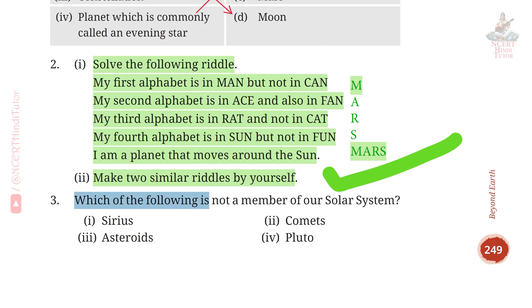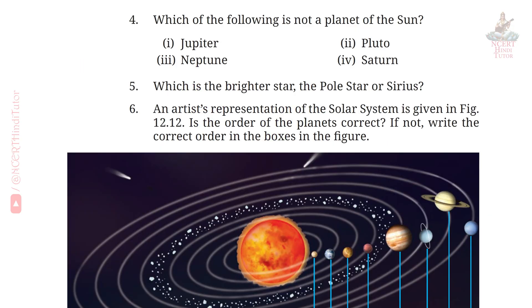Question 3: Which of the following is not a member of our solar system? Answer: First — Sirius. Question 4: Which of the following is not a planet of the sun? Answer: Second — Pluto.